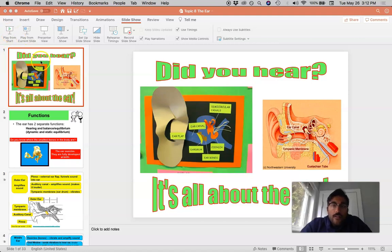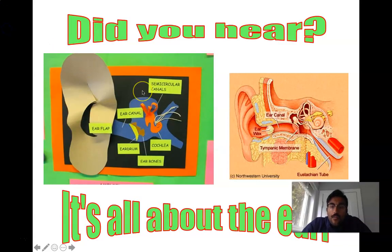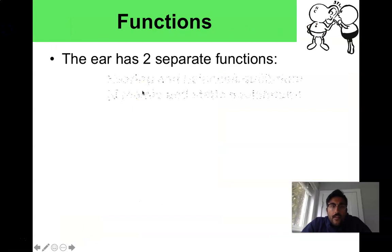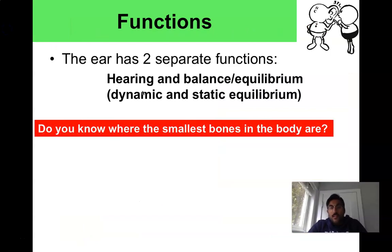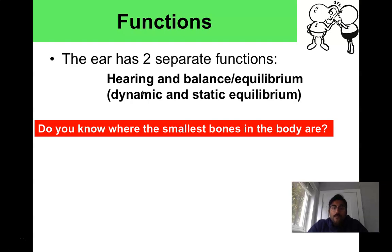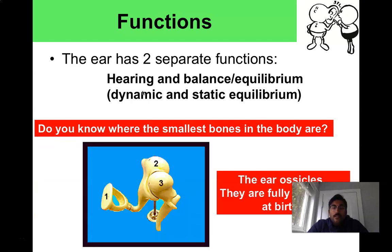Hey Bio30, we're going to talk about the ear now. The ear has two totally separate functions: hearing, and also balance and equilibrium. The smallest bones in your body are actually in the ear — they're called the ossicles and they're fully developed at birth.